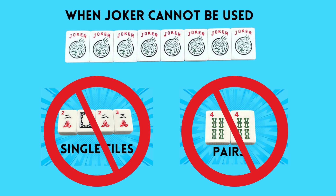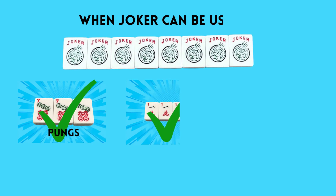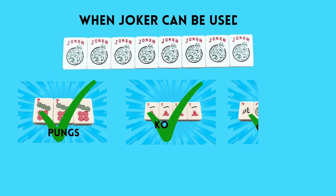And there are times when you can use Jokers, and that would be in a Pung, a Kong, or a Quint. We will be talking more about those groupings coming up a little later in this lesson.